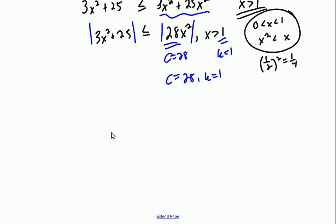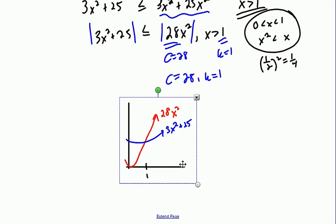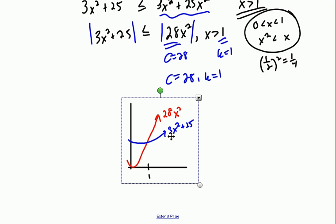So, algebraically, that's what's going on, but let's also take a look at this visually. Here's a graph of 28x², and here's a graph of 3x²+25. You can get out a graphing calculator, or you could use a website calculator like desmos.com, and you could quickly see that the 28x² is, once you get past x equals 1, the 28x² will remain larger than 3x²+25.